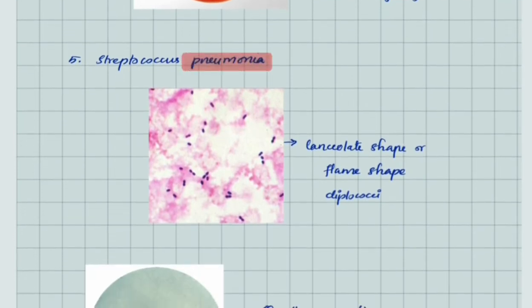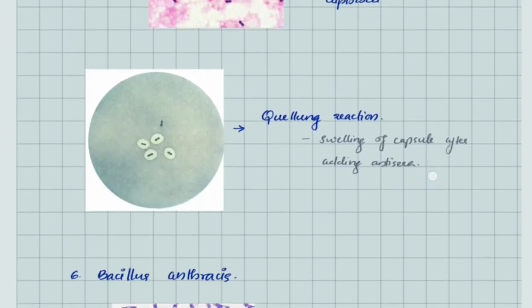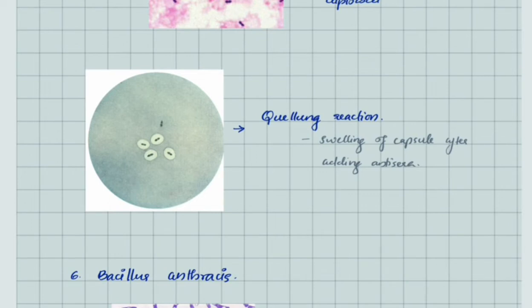Streptococcus pneumoniae has a lanceolate shape or flame shape diplococci. Since Streptococcus pneumoniae has a capsule, there is a specific Quellung reaction—when antisera is added, there is swelling of the capsule which is visible.